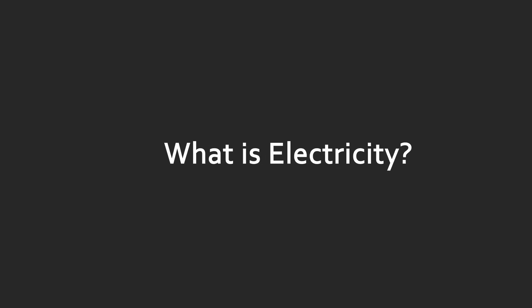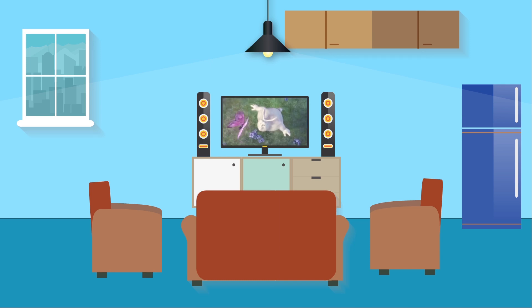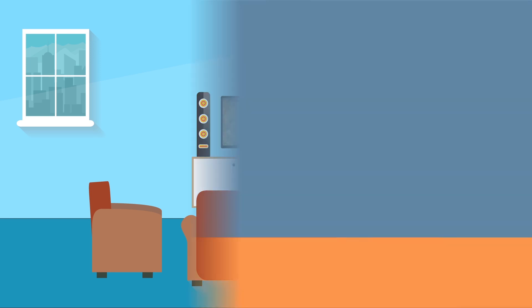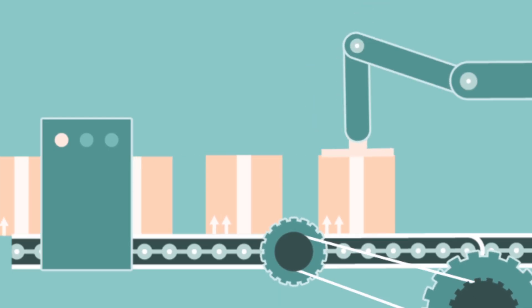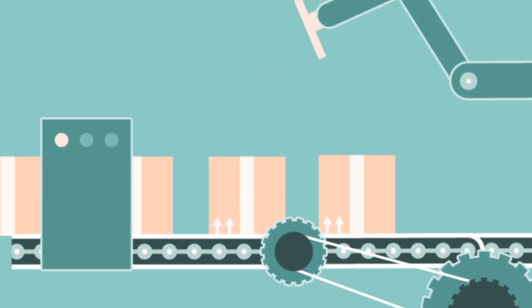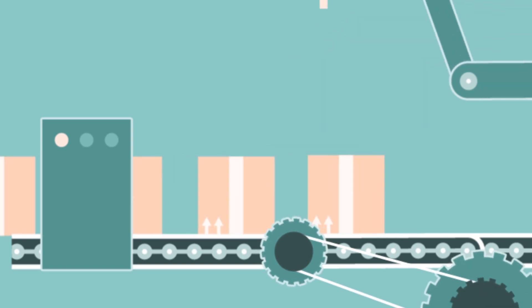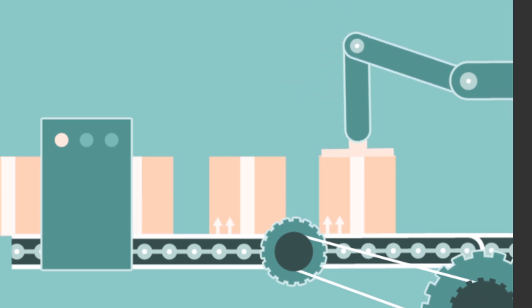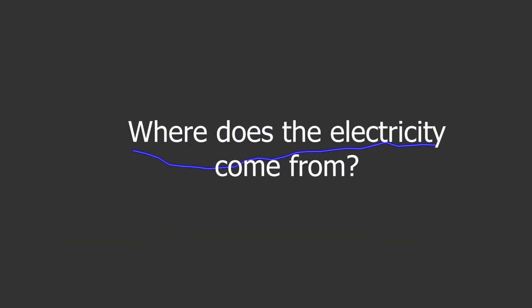What is electricity? Any appliances that we use in our daily lives, such as household appliances, office equipment, and industrial equipment, almost all of those take electricity. Therefore, we should understand electricity. The first question that we will find out the answer to is: where does electricity come from?